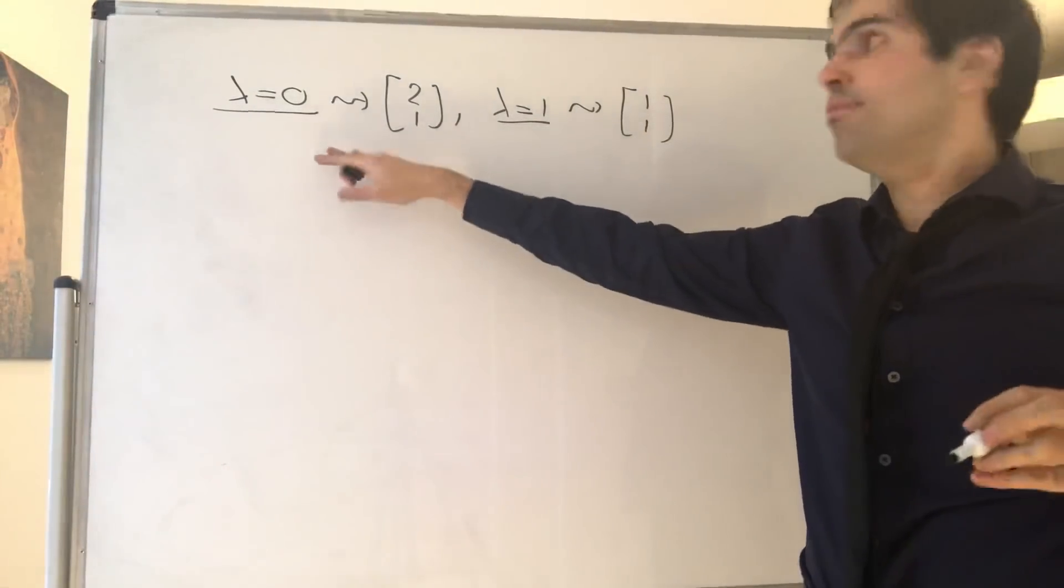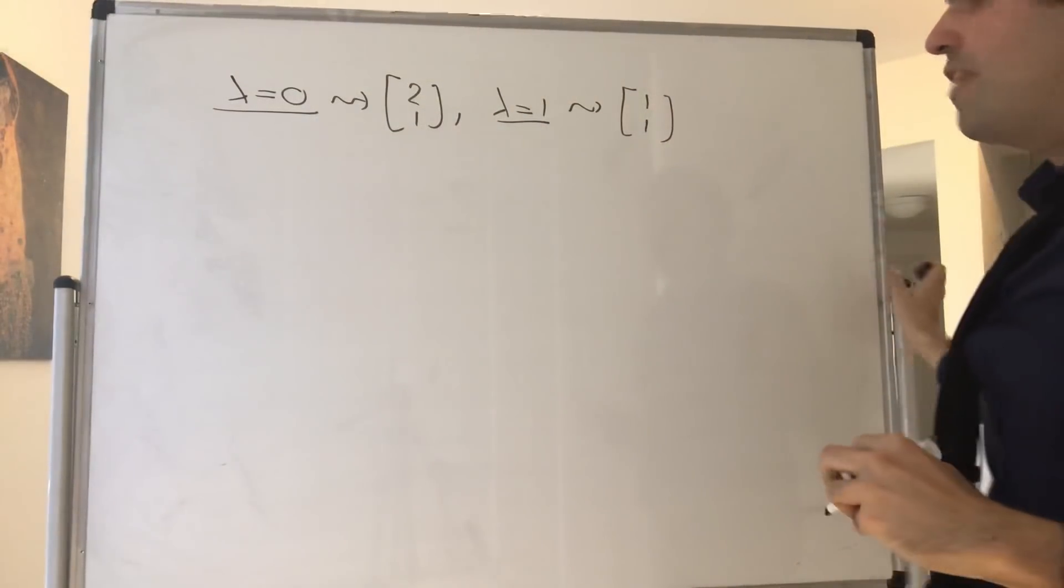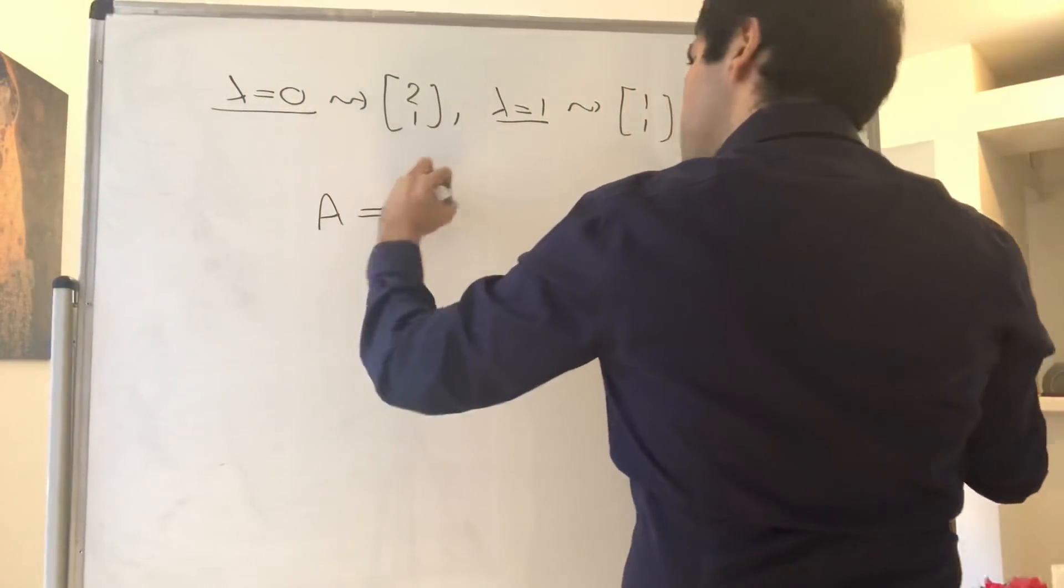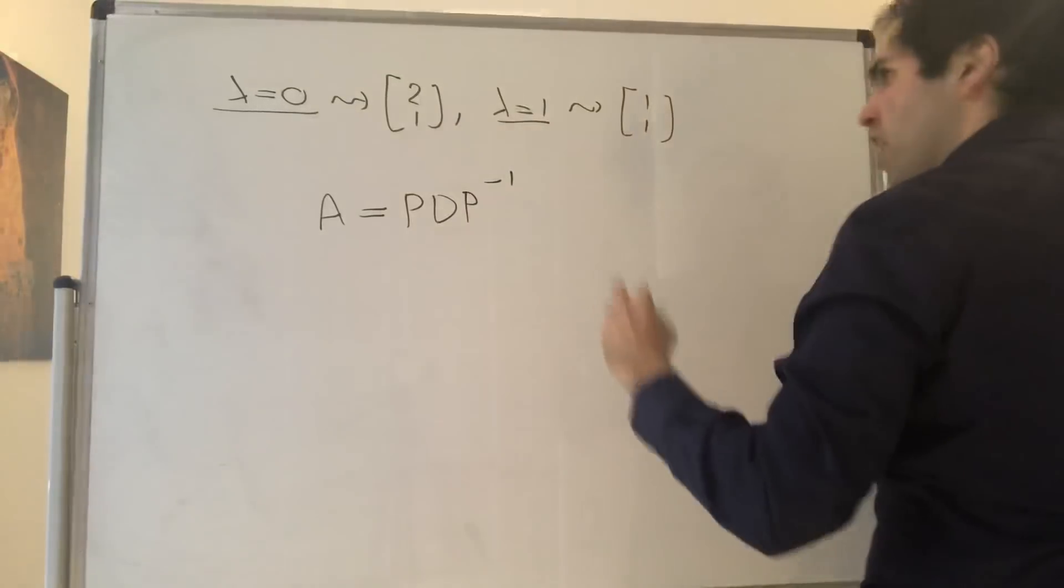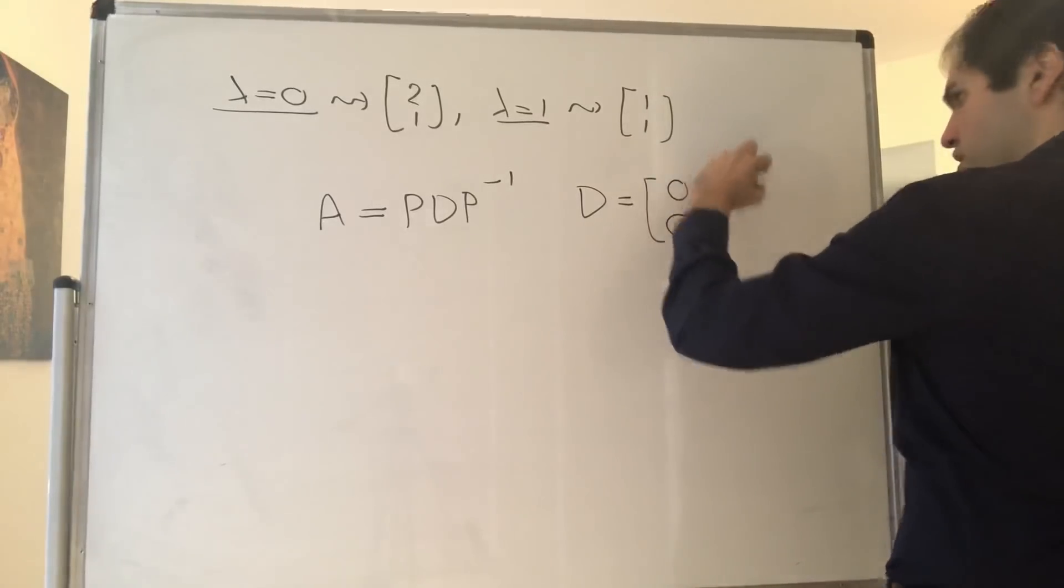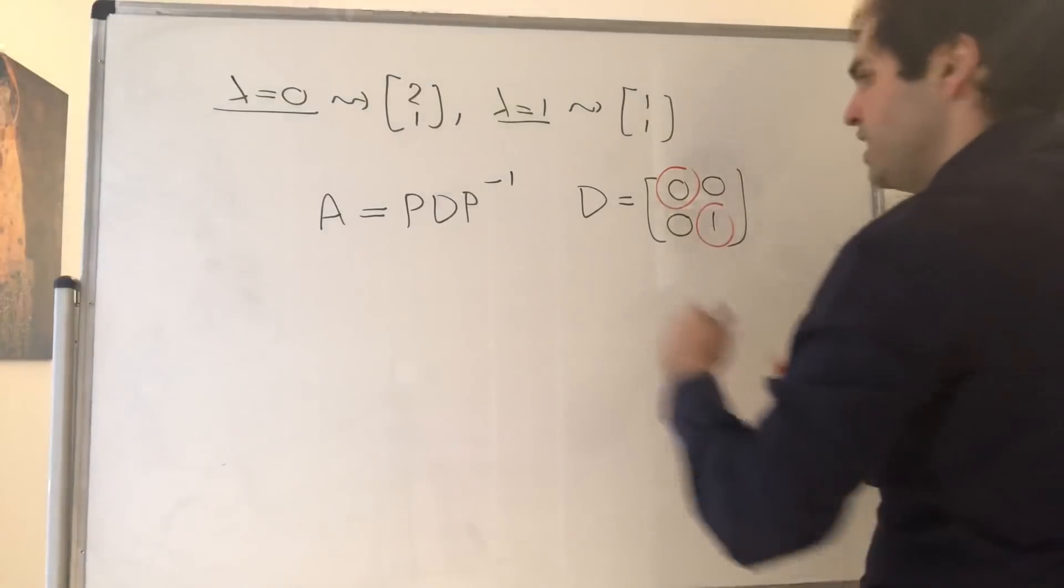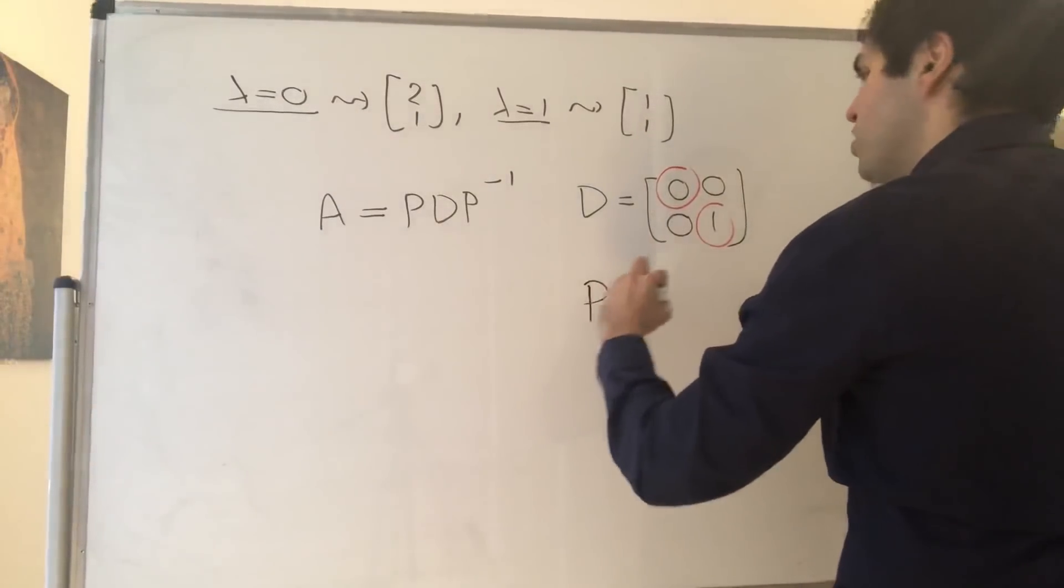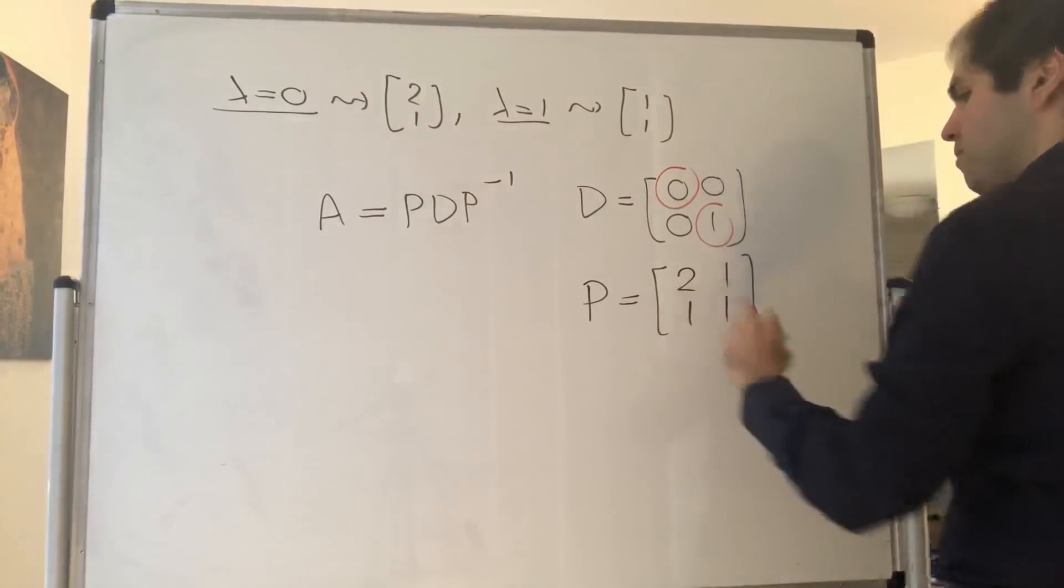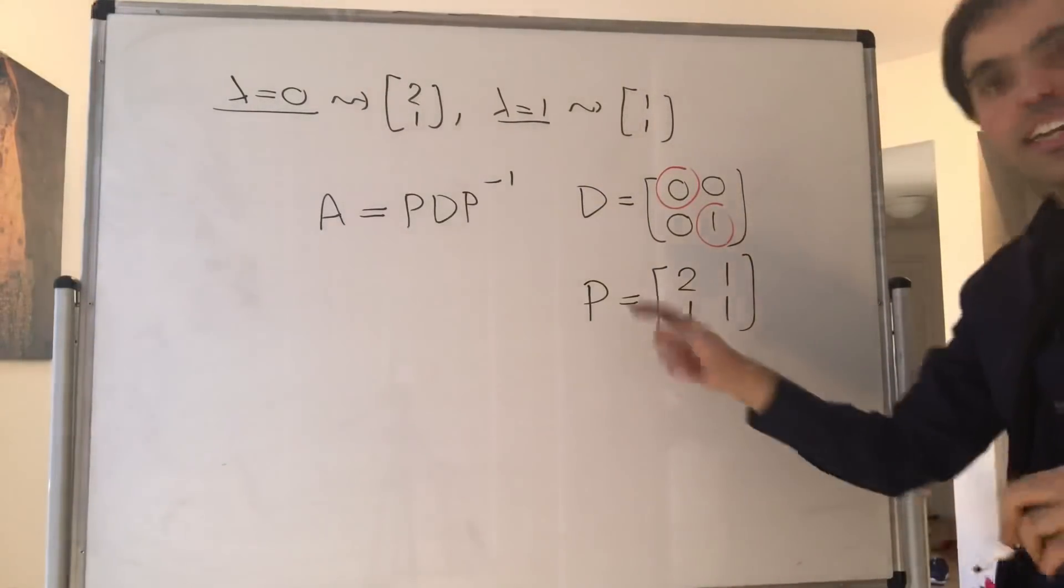So again, to summarize: for lambda equals 0, we have the vector [2, 1]. For lambda equals 1, we have the vector [1, 1]. Which tells you the following: it tells you that A is PDP inverse, where D is the matrix of eigenvalues. So [0, 0; 0, 1], where here are the eigenvalues. And P is the corresponding matrix of eigenvectors, which is [2, 1; 1, 1]. And here's the amazing fact, as usual, about diagonalization.